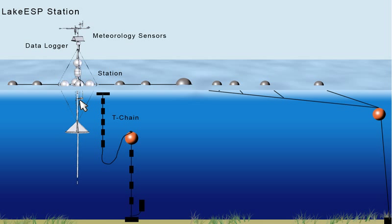There are a variety of above-surface meteorology sensors that can be connected to the Lake ESP. These sensors are mounted on the Lake ESP station mast at about 2 meters above waterline.